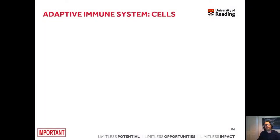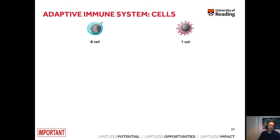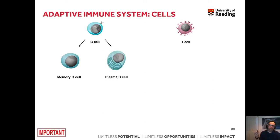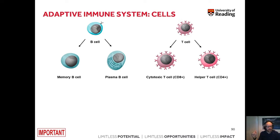The first type of cells you need to remember when it comes to the adaptive immune system are so-called B cells. The second type of important cells that contribute to the adaptive immune system are T cells. B cells can be further subdivided into memory B cells and plasma B cells. In contrast, T cells can be divided into cytotoxic T cells, sometimes referred to as CD8 positive cells, and helper T cells, referred to as CD4 positive cells.